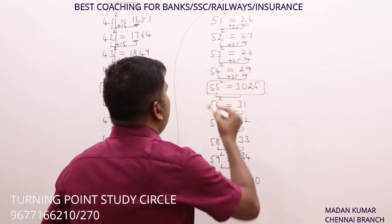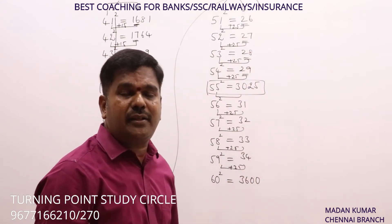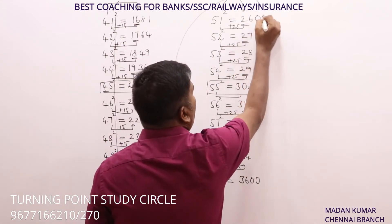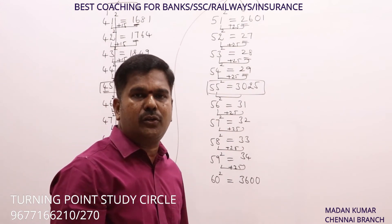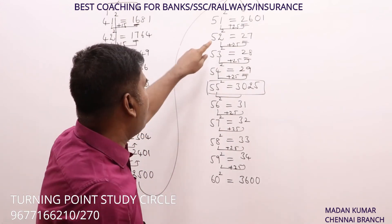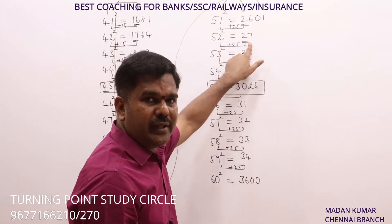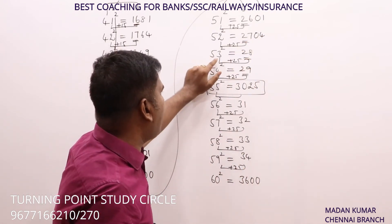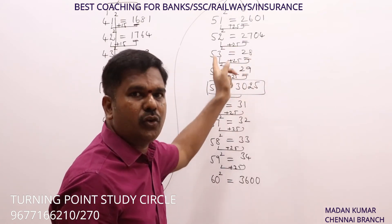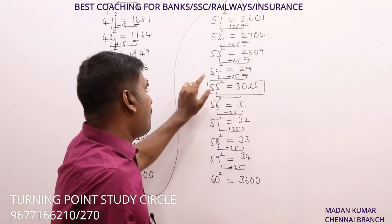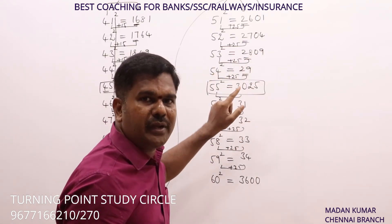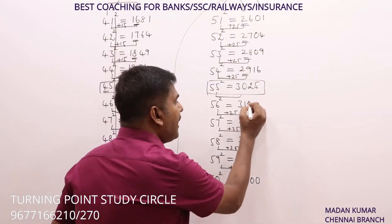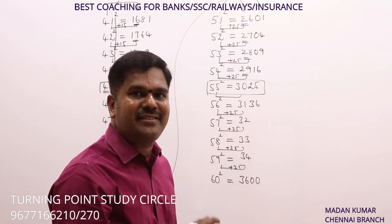Direct square means we directly take the square of the unit digit, not subtracting from 10 first. For 51²: 1 + 25 = 26, 1² = 01, so 2601. For 52²: 2 + 25 = 27, 2² = 04, answer: 2704. For 53²: 3 + 25 = 28, 3² = 09, answer: 2809. For 54²: 4 + 25 = 29, 4² = 16, answer: 2916. For 56²: 6 + 25 = 31, 6² = 36, answer: 3136 — you can remember this as a fancy number.